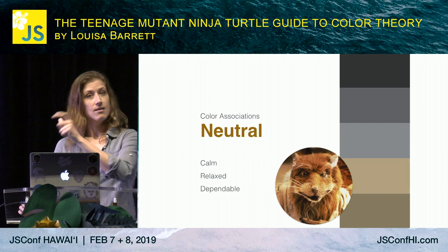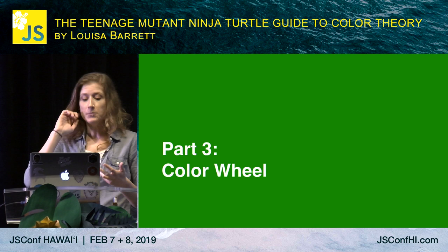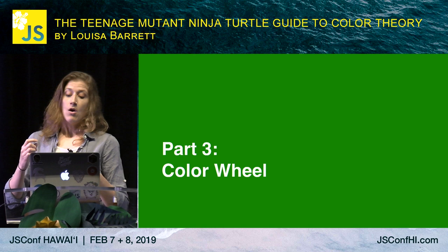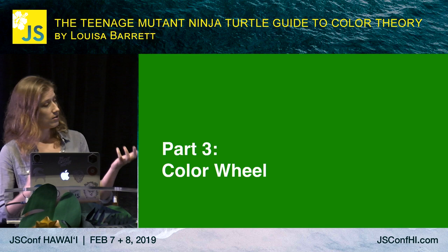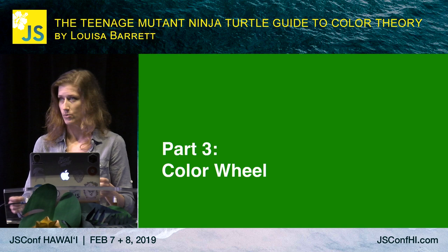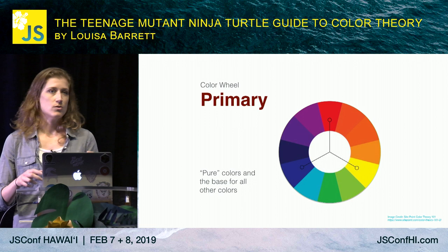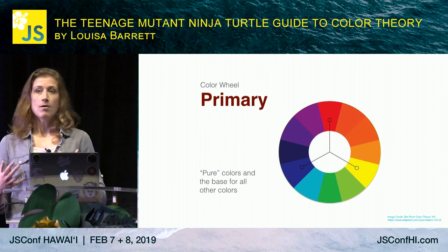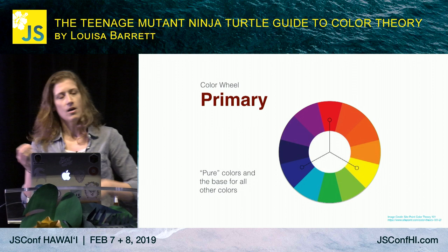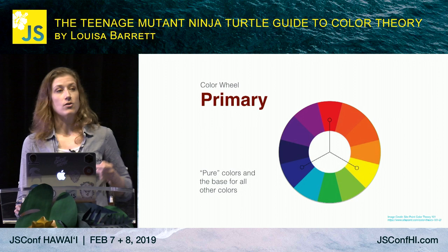Now that we know the big buckets all colors fall into, we can talk about the color wheel — or as I've heard it described, the pizza of color. The color wheel lets us understand the purity of colors and how they are created. We start with primary colors: red, blue, and yellow. These are pure colors — all colors come from them. You cannot blend two other colors together to create a primary color. They are your source of truth.